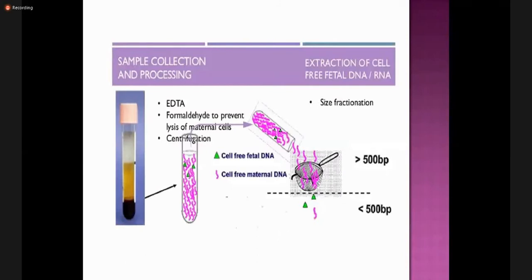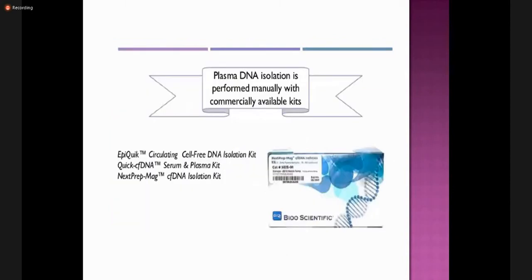The procedure to extract cells from the maternal circulation involves collecting maternal DNA, which is then detected by various techniques available in the laboratory — including PCR, gel electrophoresis systems, and FACS (fluorescence-activated cell sorting) to confirm cell lineage.